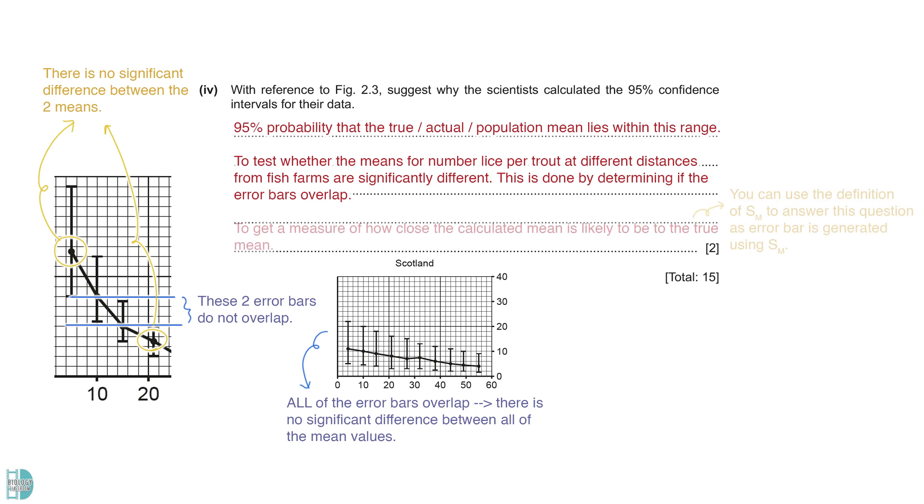Lastly, error bars are generated by using standard error. So, you can use the definition of standard error to answer this question. It is a measurement of how close the calculated mean is to the true mean. The smaller the standard error, the shorter the error bar. Hence, the closer the true mean is to the calculated or sample mean.